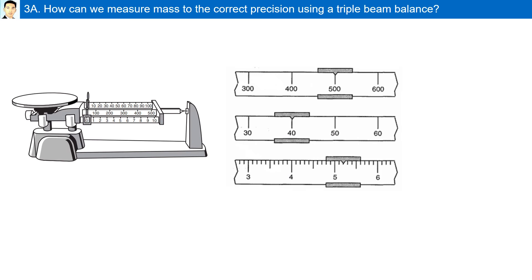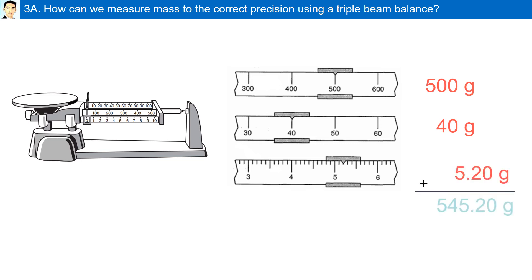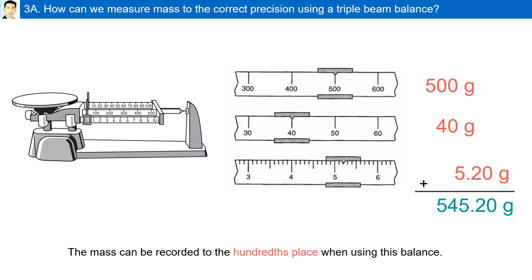How can we measure mass to the correct precision using a triple beam balance? Reading the three beams: the first beam has the mass at 500 grams, the second at 40 grams, and the final beam has it exactly at 5.2 grams. However, we can estimate one beyond 5.2; in this case it is reported as 5.20 grams. Adding it all together, the mass is 545.20 grams. The mass can be recorded to the hundredth place when using this balance.